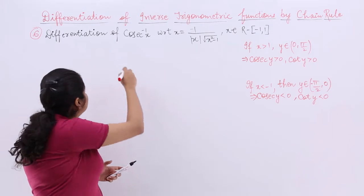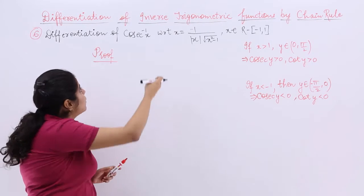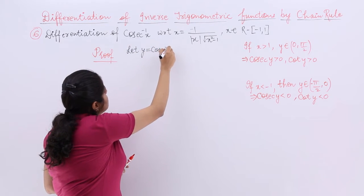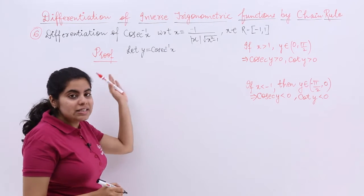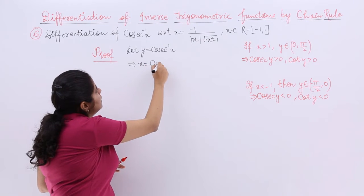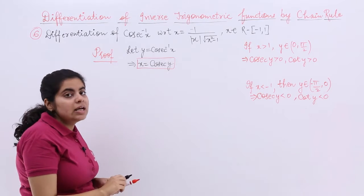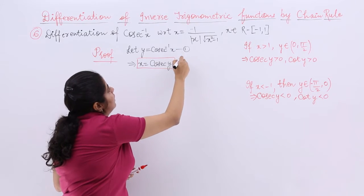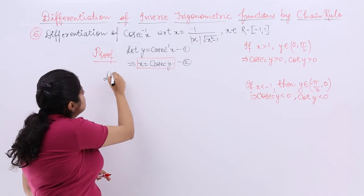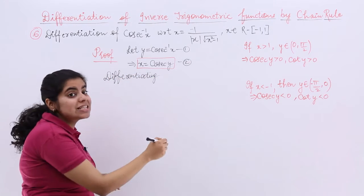I give the heading as proof. We will be going through this video very quickly since it is almost similar to the previous video. I am going to assume y is equal to cosecant inverse x. Cosecant inverse x is equal to y, or I can say that x is equal to cosecant y — that means we are taking cosecant of both sides. Let's name this equation 1 and this equation 2. We are going to differentiate.